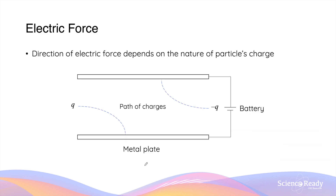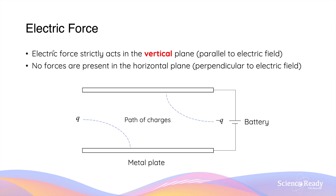Since the direction of the electric force depends on the nature of the particle's charge, the motion of the charge also depends on whether it is positive or negative. As shown in the illustration, a positive charge will experience motion towards the negatively charged side, and a negative charge will experience motion towards the positively charged metal plate. The force due to the electric field strictly acts in the vertical plane, parallel to the electric field lines, which run from the positive towards the negatively charged plate.